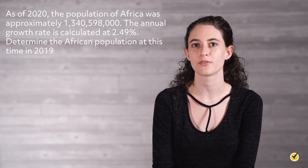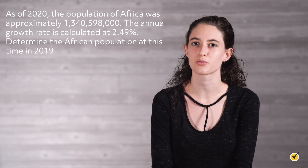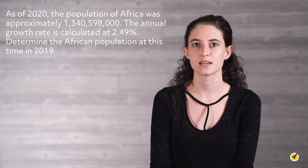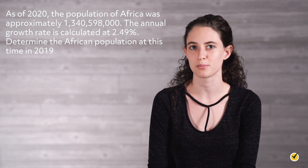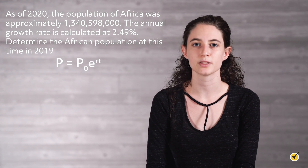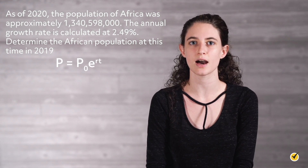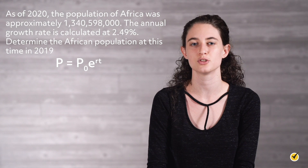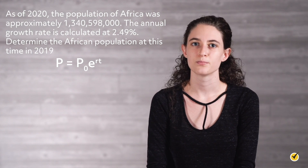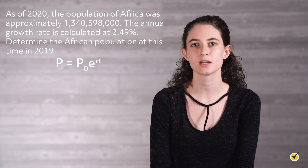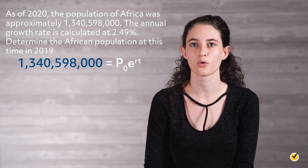So we've looked at a couple of examples that require you to find the final population. But what if you were already given the final population and asked to find the initial population? Let's look at an example. As of 2020, the population of Africa was approximately 1.341 billion. The annual growth rate is calculated at 2.49%. Use the population growth formula to determine the African population at this time in 2019. Here's what we know: the final population of Africa is approximately 1.341 billion.